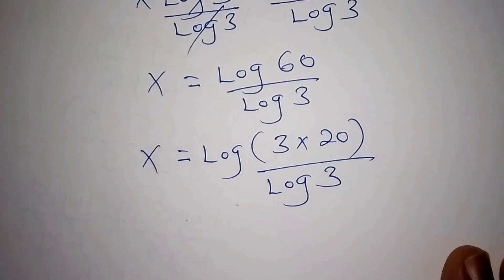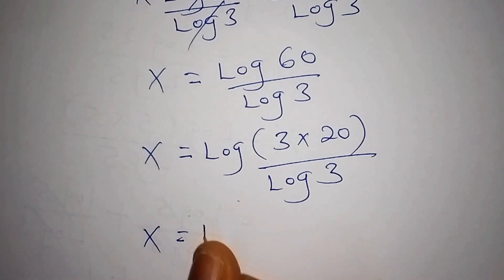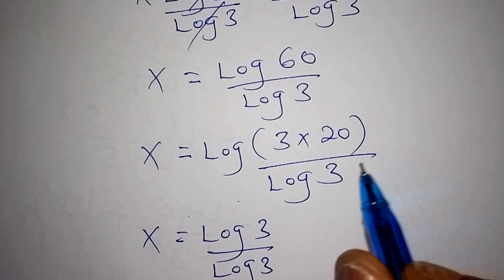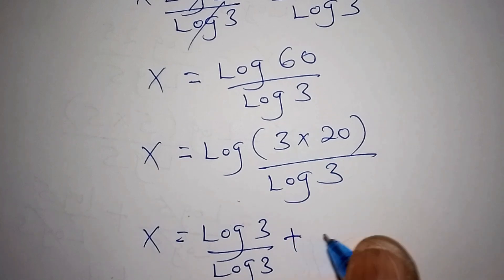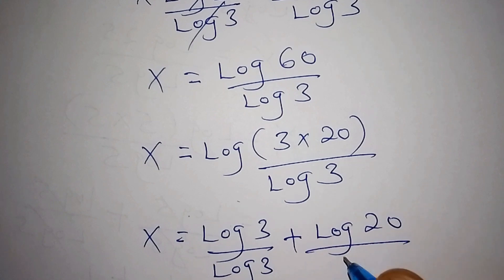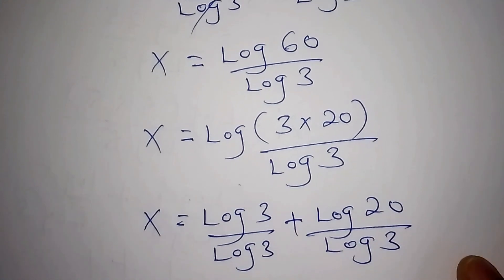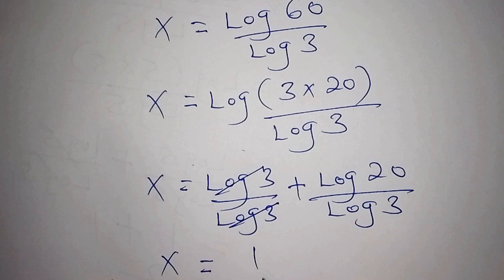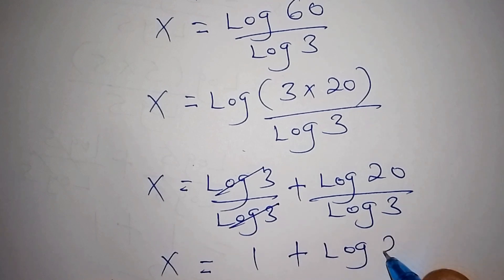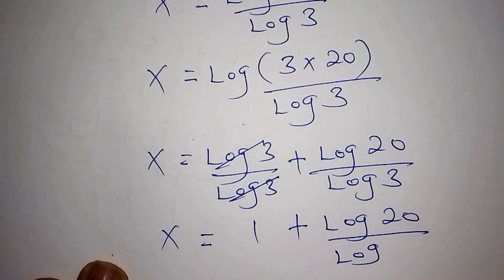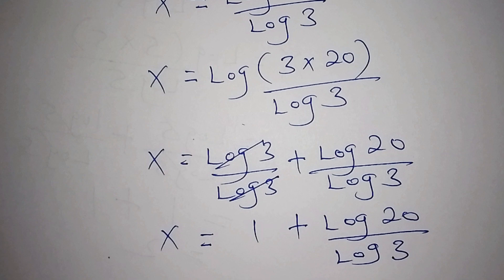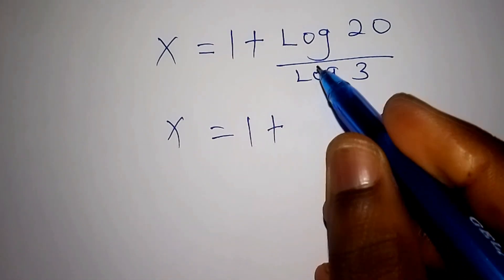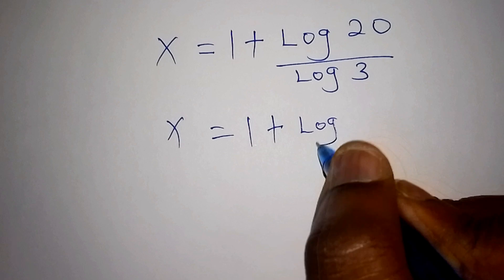We split the logarithm: x equals log 3 over log 3 plus log 20 over log 3. The log 3 over log 3 cancels to give 1, so x equals 1 plus log 20 over log 3. We can further express log 20 by writing 20 as 5 multiplied by 4.